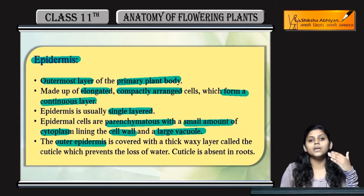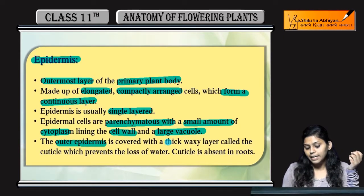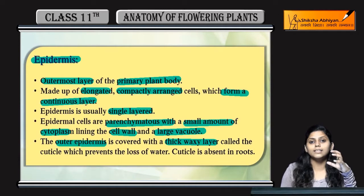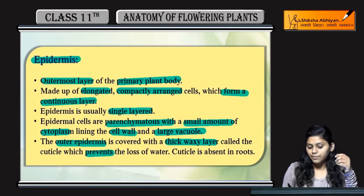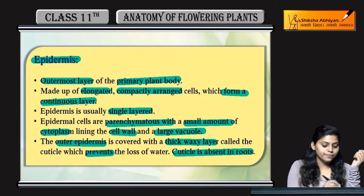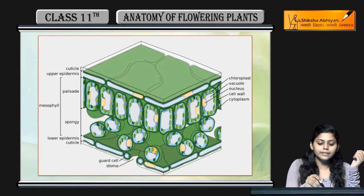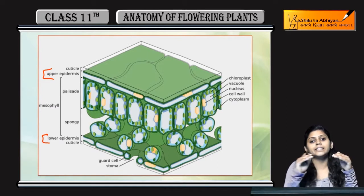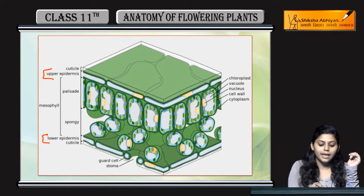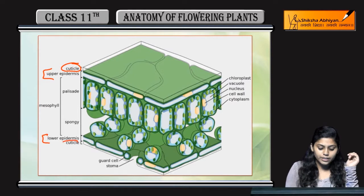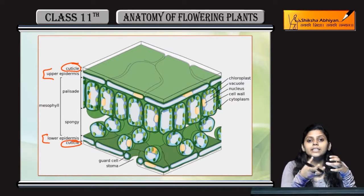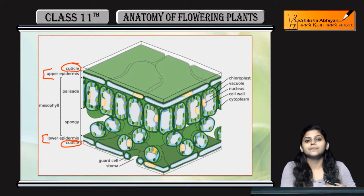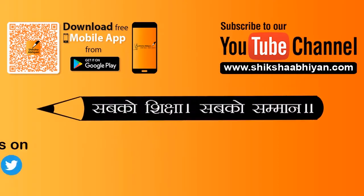The outer epidermis is covered with a cuticle. Cuticle is a thick waxy layer that prevents water loss from the plant body. Cuticle is absent in roots. You can see here: the outer epidermis and lower epidermis are both single layers of cells, covered by the cuticle.